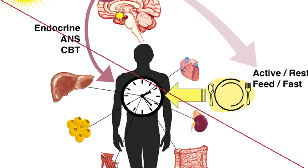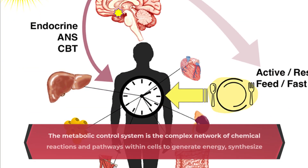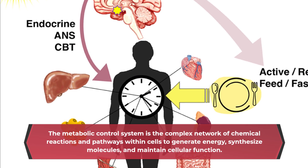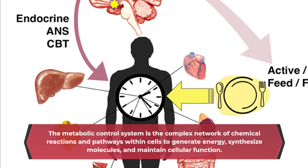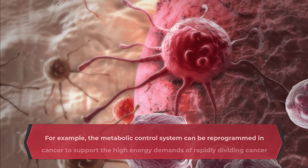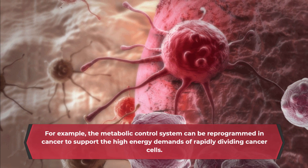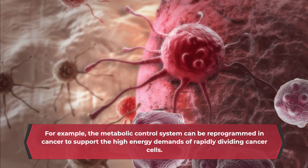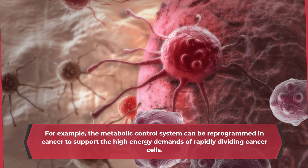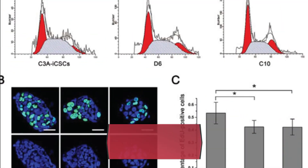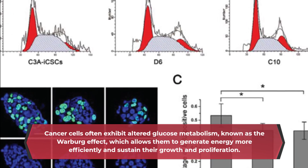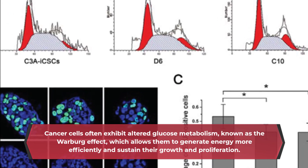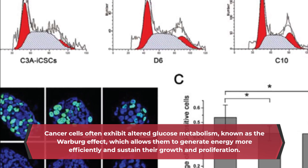The metabolic control system is the complex network of chemical reactions and pathways within cells to generate energy, synthesize molecules, and maintain cellular function. For example, the metabolic control system can be reprogrammed in cancer to support the high-energy demands of rapidly dividing cancer cells. Cancer cells often exhibit altered glucose metabolism, known as the Warburg effect, which allows them to generate energy more efficiently and sustain their growth and proliferation.